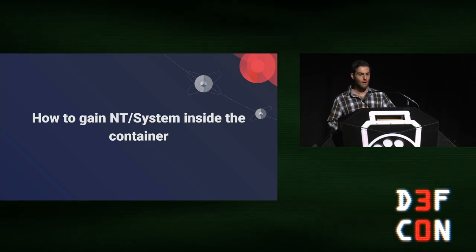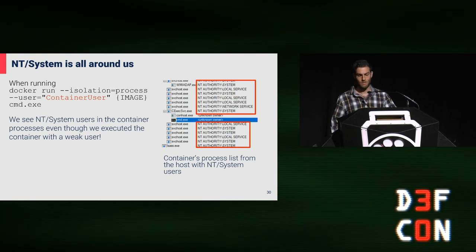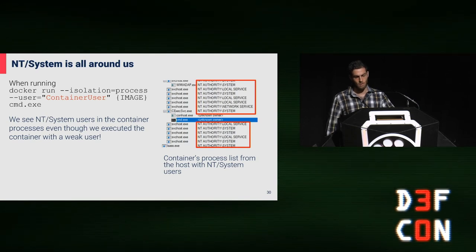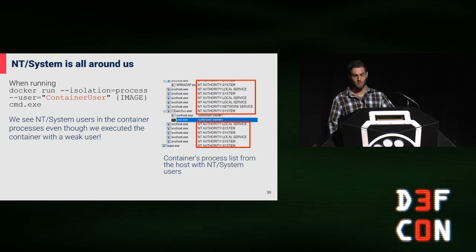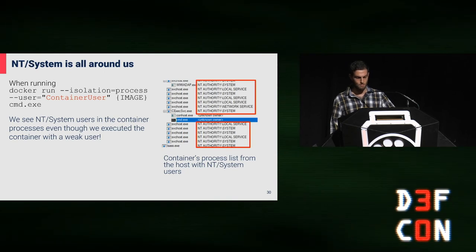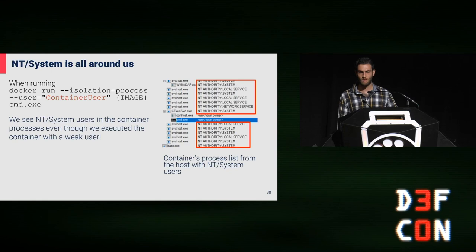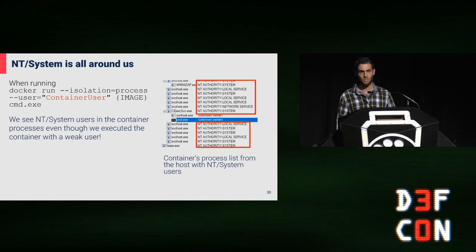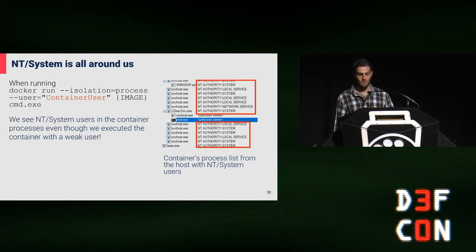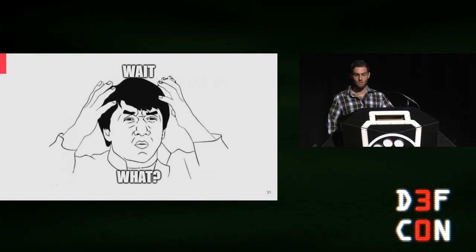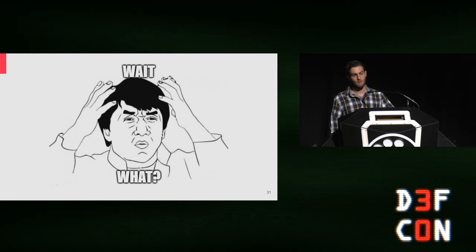Before we jump to how to escape the container, let's gain system permissions. When running the docker run command with the user flag of container user — which is a weak user — I would have expected only container user weak processes. But if you look at the process tree, lots of system processes are starting from the container image. The only process running as the user we defined is the CMD we executed. This means our process can communicate with system processes, and more interestingly, these processes are loaded from the container image which we control. So if we can control the executables, we can gain NT SYSTEM.